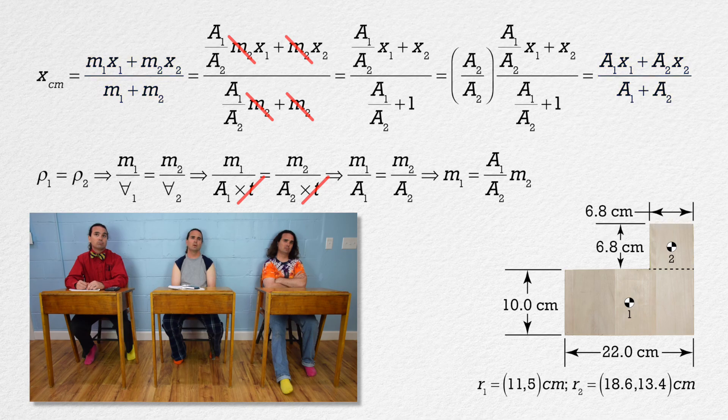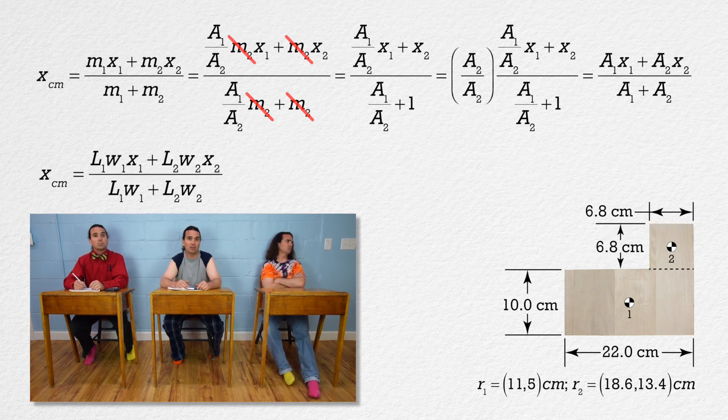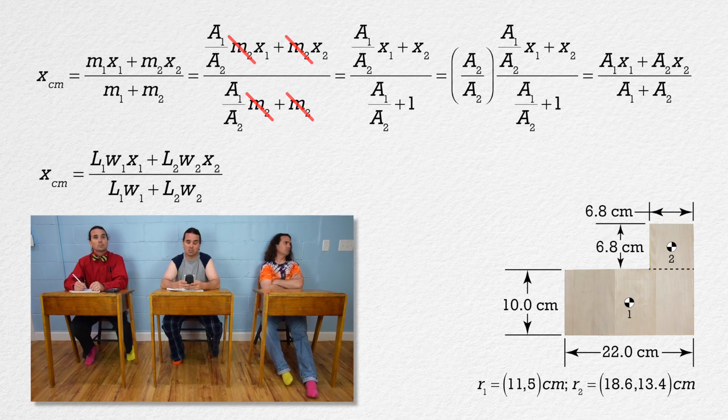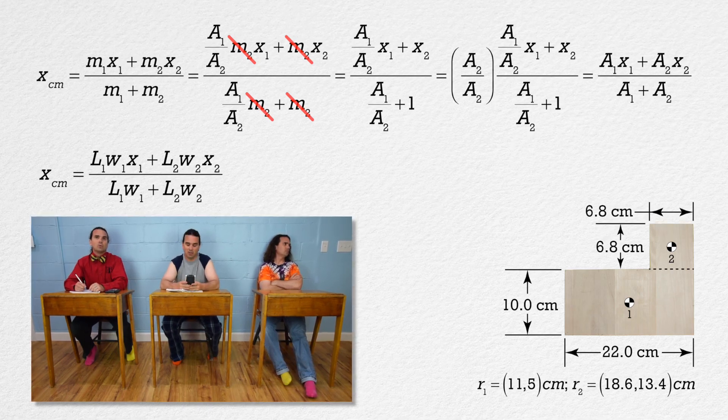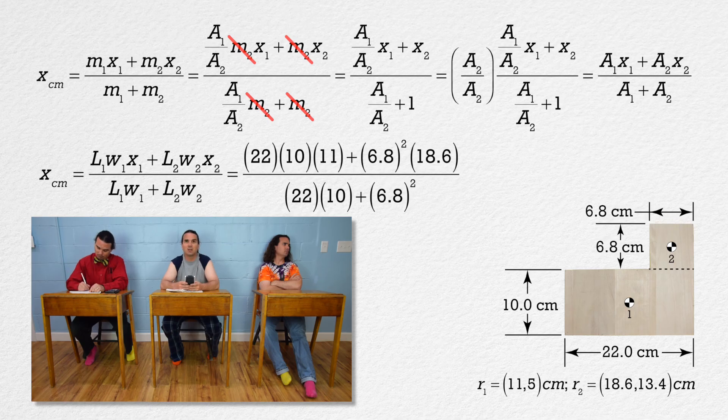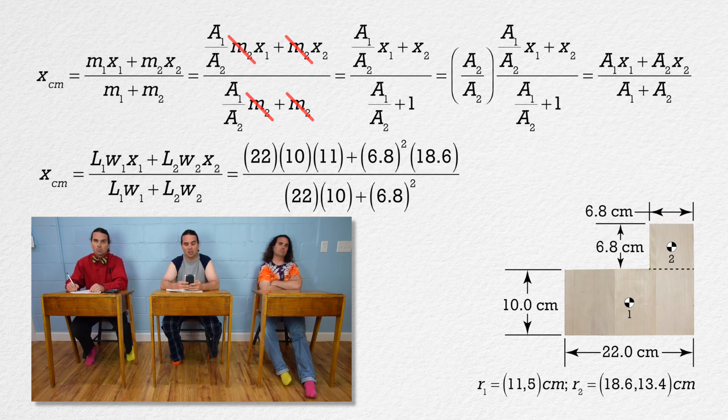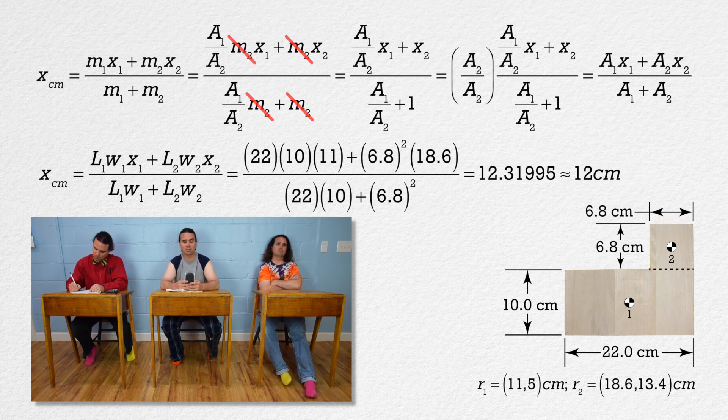Bobby, please solve the problem. Well, at this point all we need to do is substitute in numbers. Oh, but I guess we also need to substitute in length times width for all the areas. For the x-position center of mass, it works out to be 22 times 10 times 11 plus 6.8 squared times 18.6 all divided by the quantity 22 times 10 plus 6.8 squared. That works out to be 12.31995 or 12 centimeters with two significant digits.